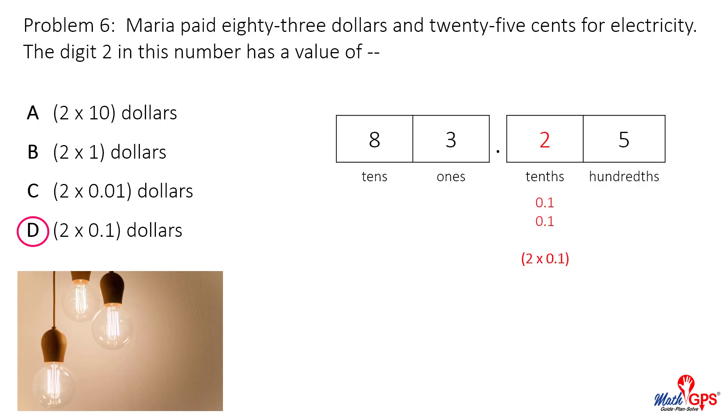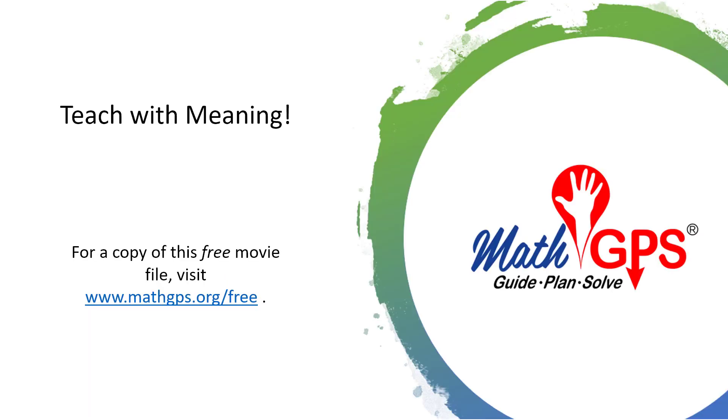A place value model will justify answer choice D. Texas fourth graders must represent the value of digits in whole numbers and decimals. This movie file may be downloaded from the Math GPS website. Thanks for watching, Math GPS.